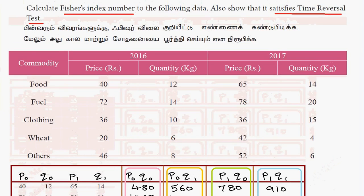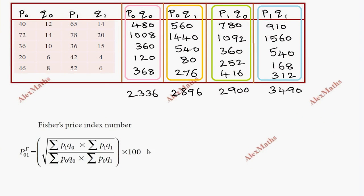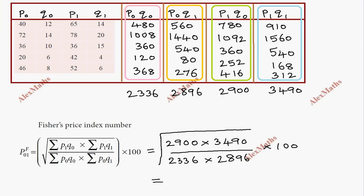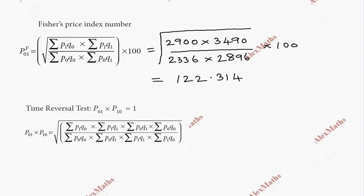First, calculate Fisher's index number by substituting values. Fisher's index number equals the square root of (Σ P₁Q₀ times Σ P₁Q₁) divided by (Σ P₀Q₀ times Σ P₀Q₁). That's 2900 times 3490 divided by 2336 times 2896. This gives approximately 122.